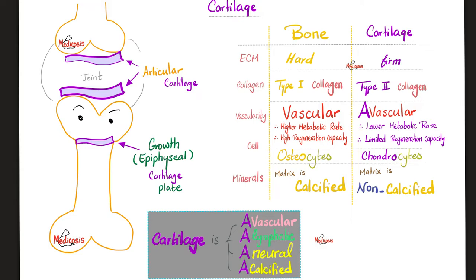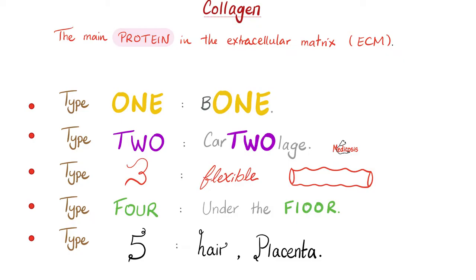Osteogenesis imperfecta is a problem in collagen type 1. Let's review the types of collagen. Type 1 is in bones, which includes teeth, the ossicles in the ear, and other tissues like tendons, and even some eye tissue like the sclera. Type 2 is in cartilage. Type 3 is very flexible, so you find it in blood vessels. Type 4 is in the basement membrane. Type 5 you find in hair and placenta.